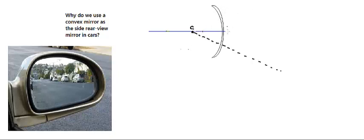I've shown here a convex mirror where the right-hand side is the reflecting surface. Let's say the vehicle is moving in this direction and the driver is on this side, looking at objects as a reflection from this convex mirror. If this is the mirror, this is the center of curvature, and the dotted line shows the normal at a given point. I'll take a reflected ray reaching the eye of the driver.